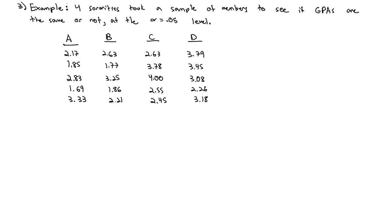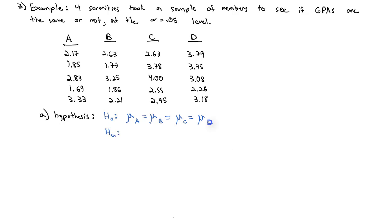Here all the sororities have the same number of people in each sample; however, that is not a requirement for the ANOVA test — they could all be different sizes. Running through the same six steps we always use for a hypothesis test, first we define the hypotheses. Our null hypothesis is that the average GPA of all four sororities is exactly the same: mean of A equals mean of B equals mean of C equals mean of D. Our alternate hypothesis is that at least one is different.